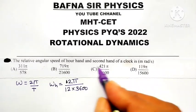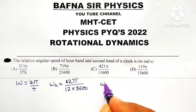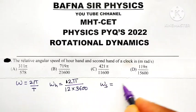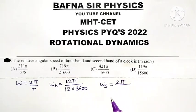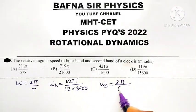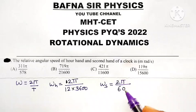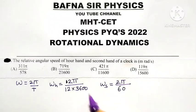Whereas the angular speed of second hand is equal to 2π divided by, what is the time taken by second hand to complete one rotation? It takes a time of 60 seconds.